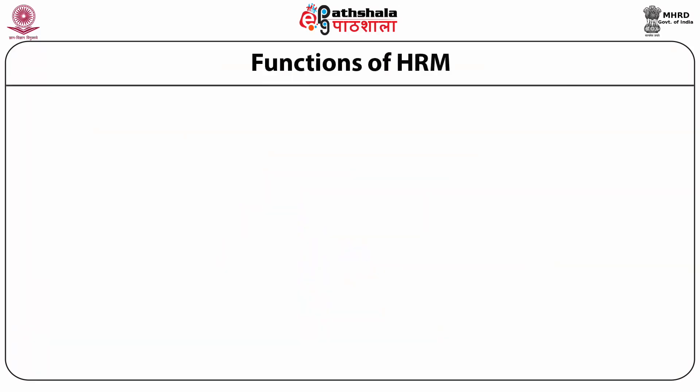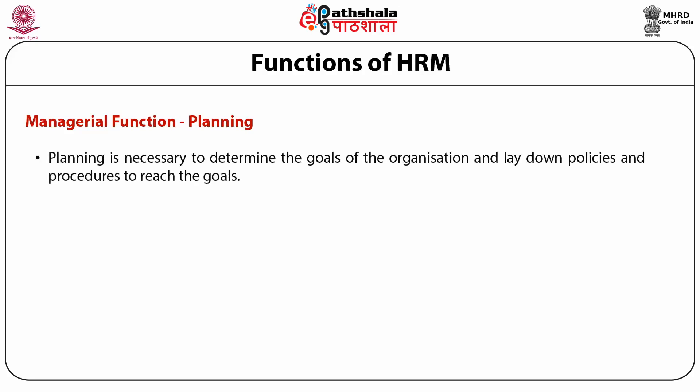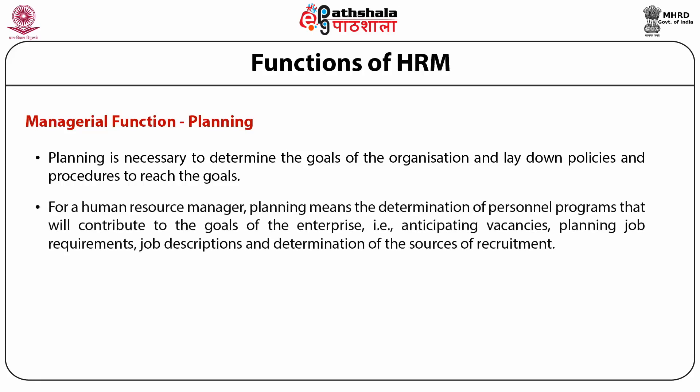Managerial function — Planning: To get things done through subordinates, a manager must plan ahead. Planning is necessary to determine the goals of the organization and lay down policies and procedures to reach those goals. For a human resource manager, planning means the determination of personnel programs that will contribute to the goals of the enterprise — anticipating vacancies, planning job requirements, job descriptions and determination of sources of recruitment.